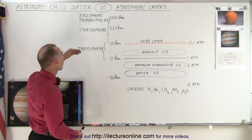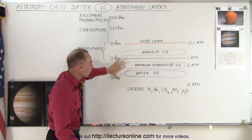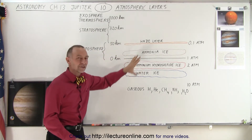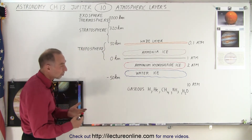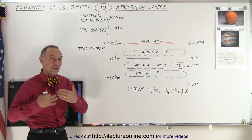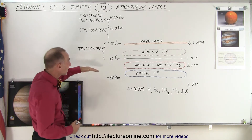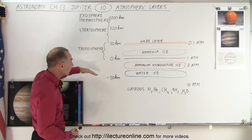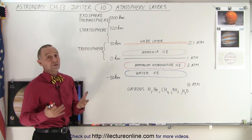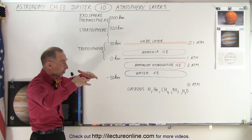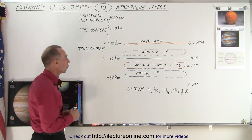Above that we have the exosphere. I did not draw this to scale because I wanted the details to be large enough. The exosphere is way out there — beyond 1,000 kilometers, beyond 600 miles — so the atmosphere of Jupiter is much thicker than Earth's atmosphere, which of course makes sense given it's a giant planet with an enormous gravitational force.